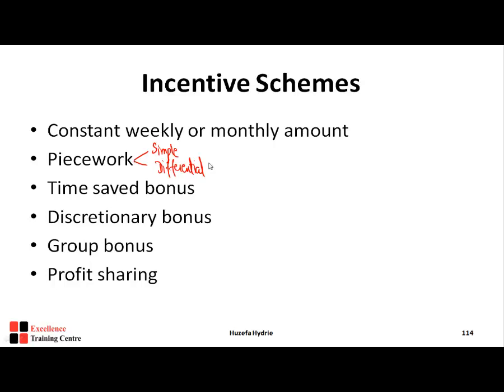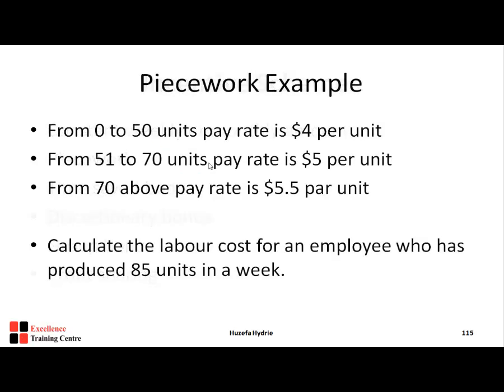Profit sharing ties the bonus to the company's profit — for example, if the company earns $1 million profit, the bonus for employees might be 1% or 2% of that profit. So the bonus is based on the profit achieved by the company.